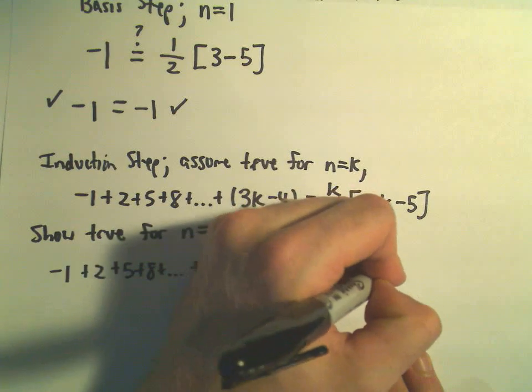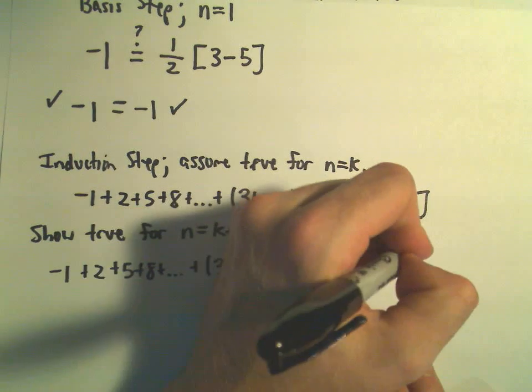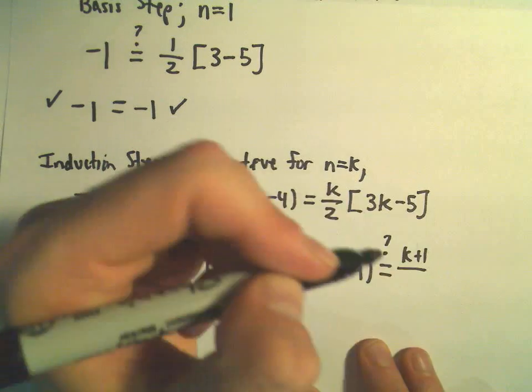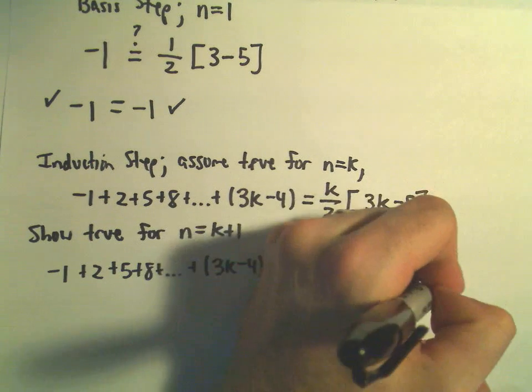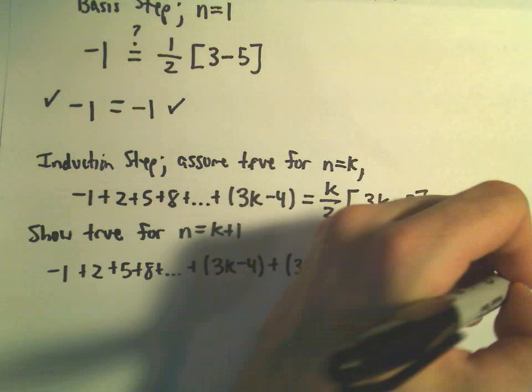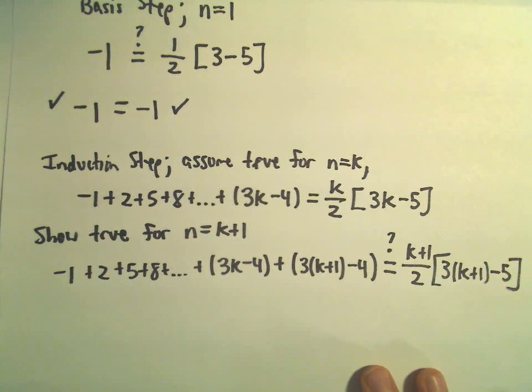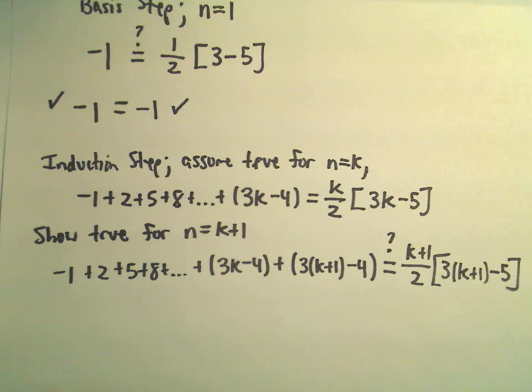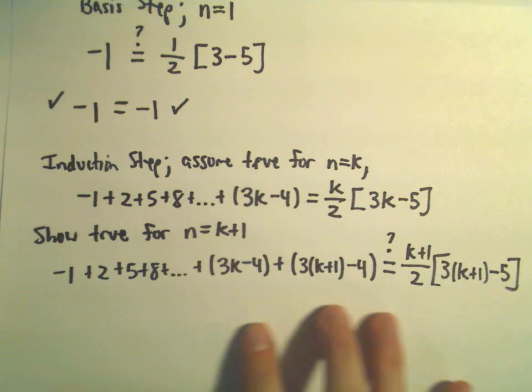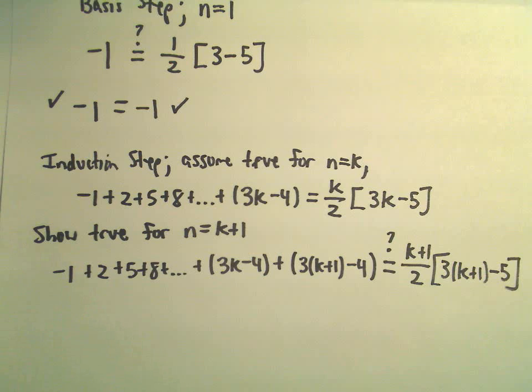we'll have 3k minus 4 plus 3 times k plus 1 minus 4. And again, I'm trying to ask myself in this case, is that going to be equal to k plus 1 over 2 times 3 times k plus 1 minus 5. Okay, so now I'm going to justify that these two quantities on each side are equal, and at that point we'll be done.